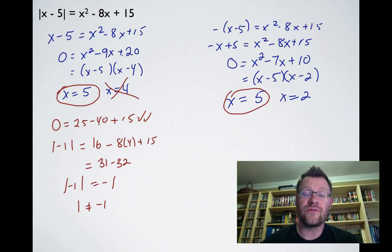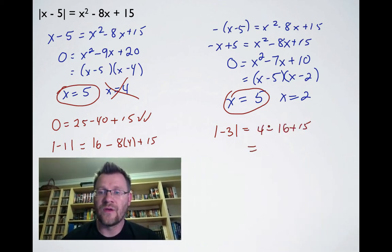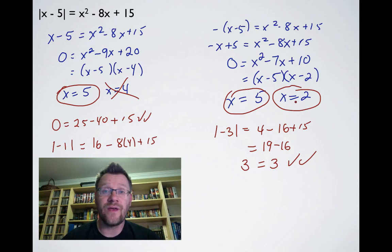You need to check your answers at all times to avoid false answers. Checking x = 2: left side is |-3| = 3, right side is 4 - 16 + 15 = 3. This checks out, so we have only two answers: x = 5 and x = 2.